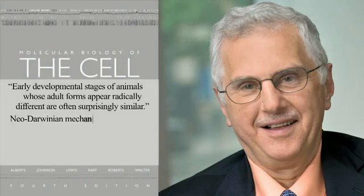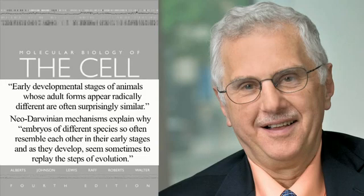So when he tells me that's been corrected, let's take a look at this modern book. It says: 'Early developmental stages of animals whose adult forms appear radically different are often surprisingly similar. Neo-Darwinian mechanisms explain why embryos of different species so often resemble each other in their early stages, and as they develop, seem sometimes to replay the steps of evolution.' So these things look similar as they're developing because they come from the same source.